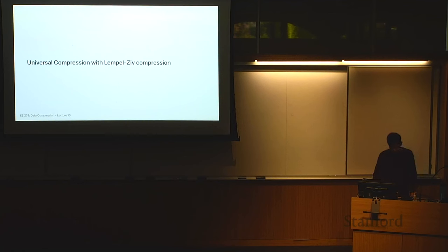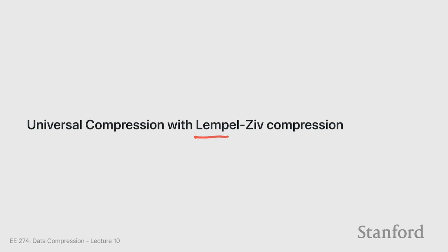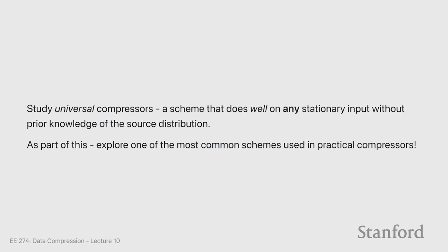Shannon did his 1948 paper; people worked on IID sources and context-based approaches. But nobody had an idea whether, for a general stationary distribution, you could have a compressor that works for any distribution without knowing it in advance. Then there were papers by Abraham Lempel and Jacob Ziv at Bell Labs who basically changed the world of compression in 1977 and 1978. What we will study is the concept of universal compressors — a scheme that does well on any stationary input without prior knowledge of the source distribution.